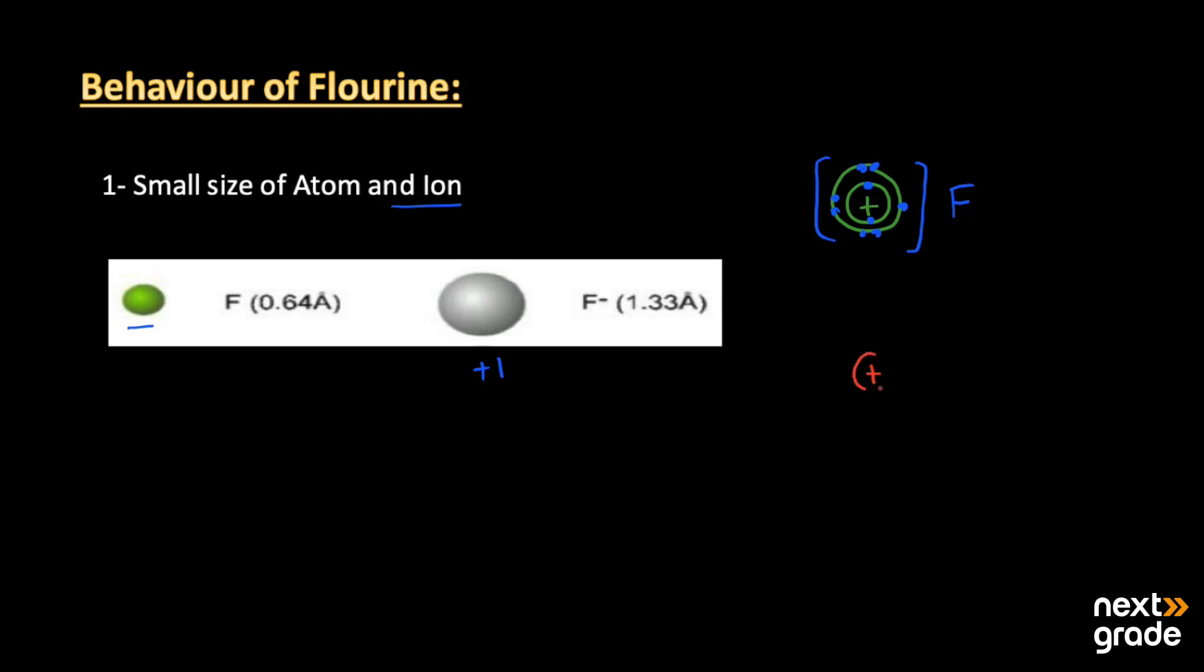When it gains one more electron, the first shell contains two electrons and the last shell already has seven electrons. Now it gains one more electron, changing into the fluoride ion F minus. The first shell contains two electrons and the last shell contains eight electrons.